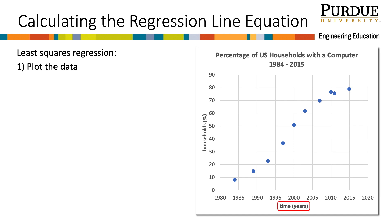Note that time is commonly the independent variable, because we can't control it. The data appear roughly linear. So we will use least squares regression to create a linear model of the relationship between time and percent of U.S. households with a computer.